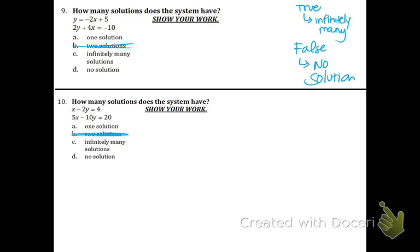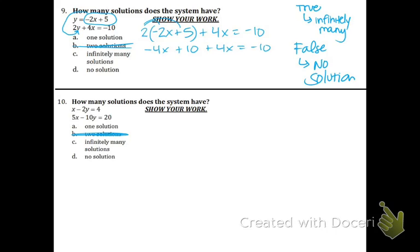The first equation in number 9 has the y by itself, which is awesome. So we're going to take that negative 2x plus 5 and plug it in for the y in the other equation. So now we have 2 times (negative 2x plus 5) plus 4x equals negative 10. Share the 2: negative 4x plus 10 plus 4x equals negative 10. The 4x's cancel. We get 10 equals negative 10 — that is a false statement, so that means we have no solution.